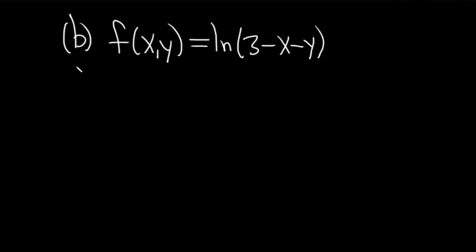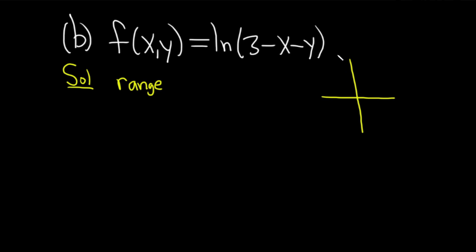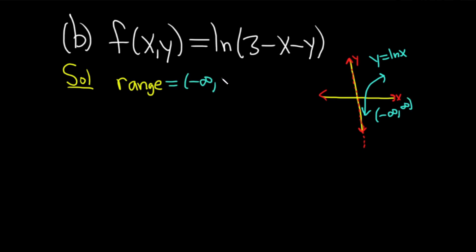Let's find the domain and range. Just to be different, let's find the range first this time. To do that, we want to think about what the graph of the natural log looks like. The natural log of x has a vertical asymptote along the y-axis, and the graph goes up forever and down forever. So the range of ln x is negative infinity to infinity. In this case it's going to be the same — negative infinity to infinity — because we do just have a natural log here. So the range is all real numbers.